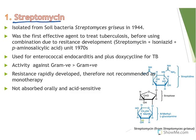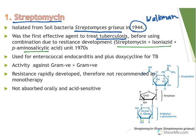Streptomycin was isolated from a soil bacterium, Streptomyces griseus, in 1944 by Selman Waksman, who was also the first researcher to coin the term 'antibiotic.' It was the first effective agent to treat tuberculosis. It used to be used in combination with isoniazid and para-aminosalicylic acid, but streptomycin was the first known antibiotic used to treat tuberculosis. It is also used to treat enterococcal endocarditis, and its activity is greater against gram-negative than gram-positive organisms.